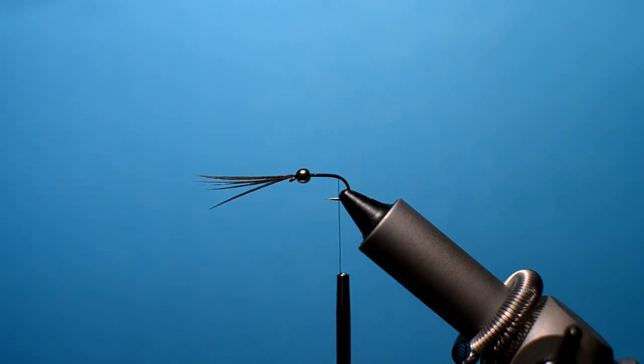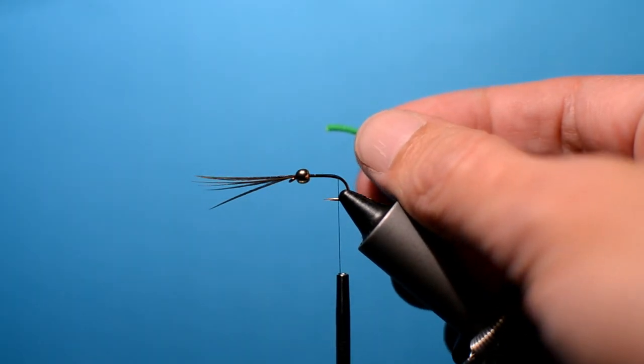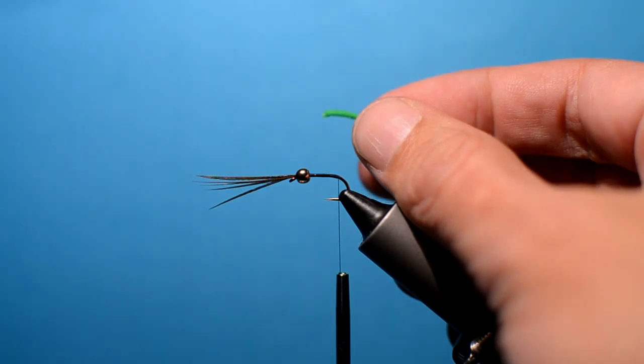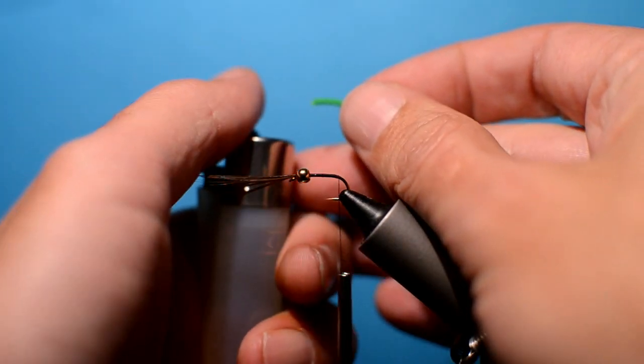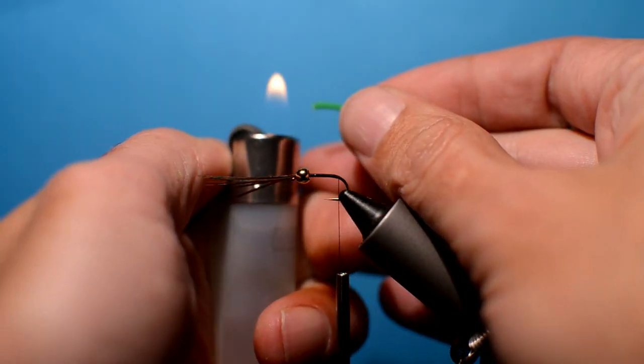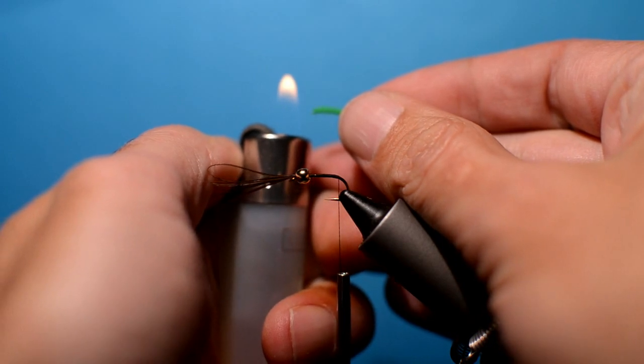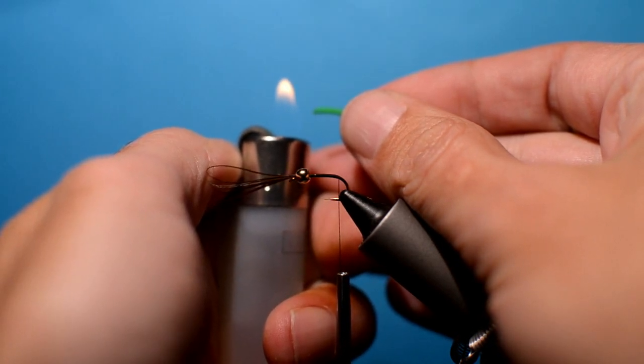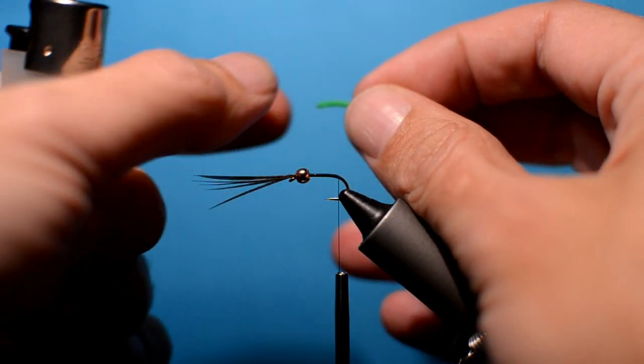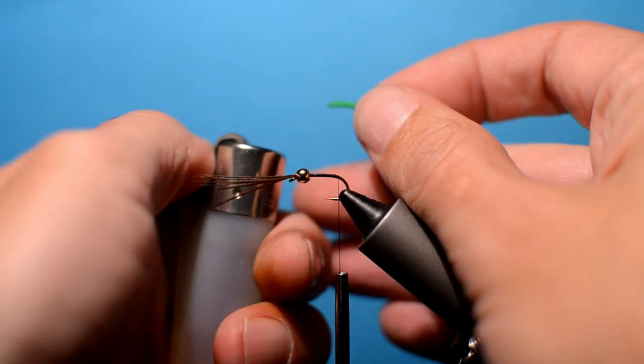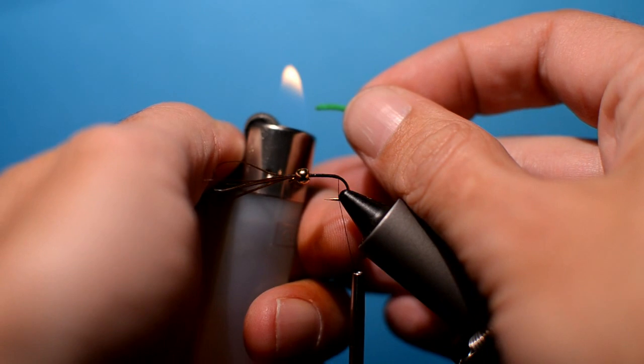Now for the butt section, what we want to take is a piece of green chenille and a lighter. We just want to singe the end, not syringe. Don't want to go too mad, otherwise it just burns completely away.